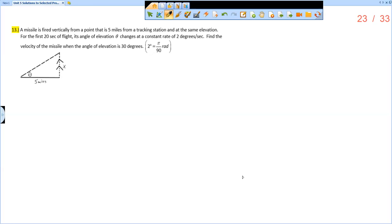This is the solution video for section 5.3, problem number 13. A missile is fired vertically from a point that is 5 miles from a tracking station at the same elevation. For the first 20 seconds of flight, its angle of elevation, theta, changes at a constant rate of 2 degrees per second.